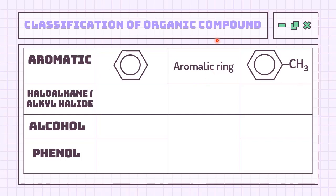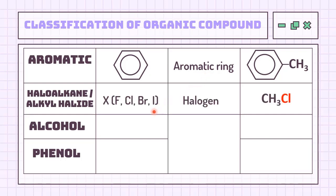We will learn about aromatic compounds more thoroughly in Chapter 6, Benzene and its Derivatives. Next, we have halogens from Group 17 — either fluorine, chlorine, bromine, or iodine — attached to the hydrocarbon. The class of compound is known as haloalkane, due to the functional group of a halogen attached to the alkane chain with only a single bond.